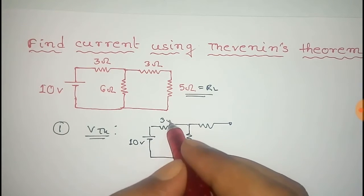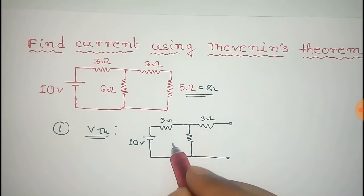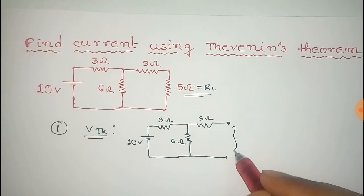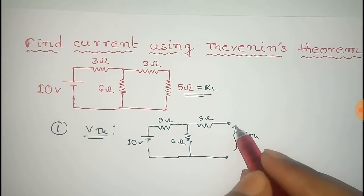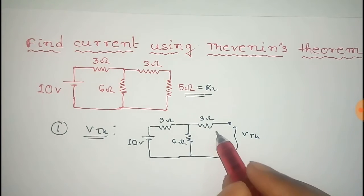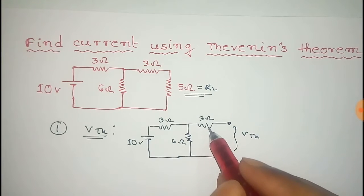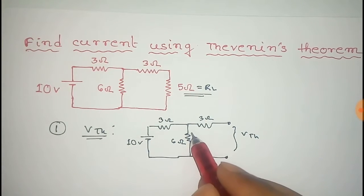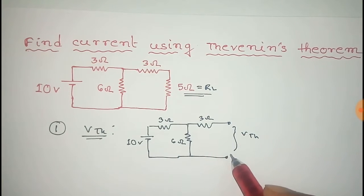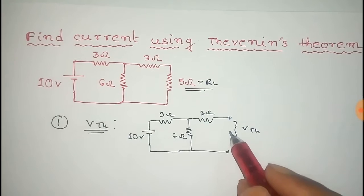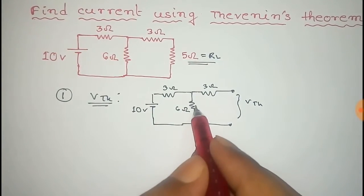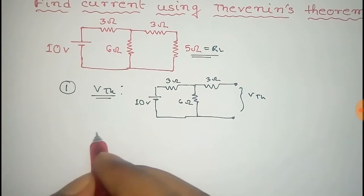The circuit shows 10 volts, with resistances of 3 ohm, 3 ohm, and 6 ohm. The voltage appearing across these open terminals is called Thevenin voltage. Since these terminals are open, there will be no current flow in this 3 ohm resistor. So the voltage appearing across this 6 ohm resistor would be the same as appearing across these terminals.